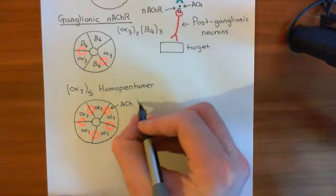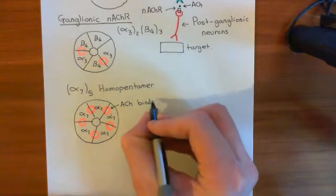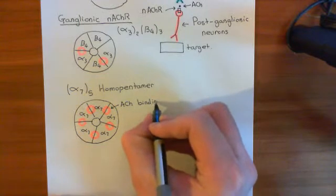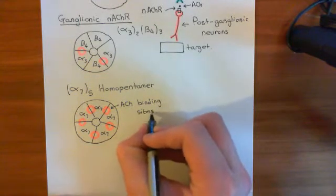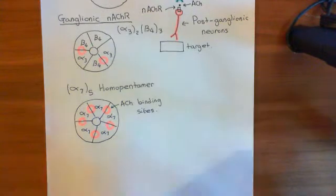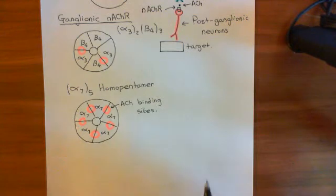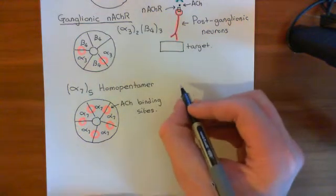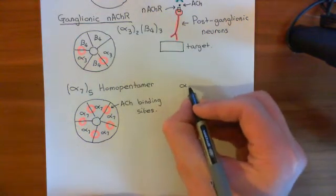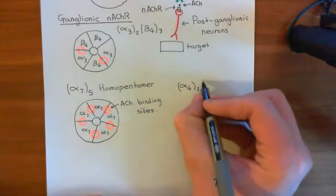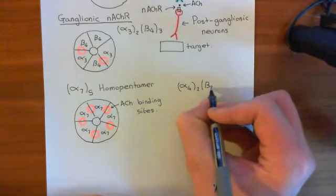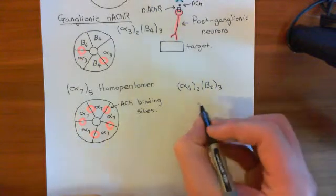These alpha-7, 5 homopentamers are very important, or believed to be very important, in the addiction process to nicotine. Finally, let's look at the other form in the CNS, which is the alpha-4, 2, beta-2, 3 heteropentamer.